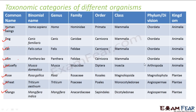Our next topic would be taxonomical aids. There we will see how binomial names are actually assigned — how exactly it is done in real life. It is easy to say theoretically that we have these categories and whenever you find a new organism, just put it into one of them. But how do we actually do that? That is what we will see in taxonomical aids.